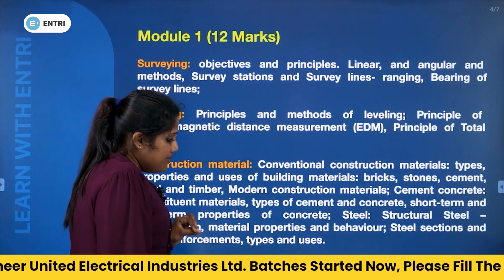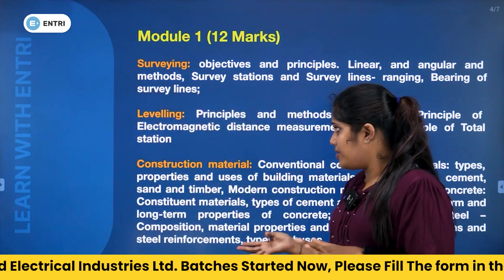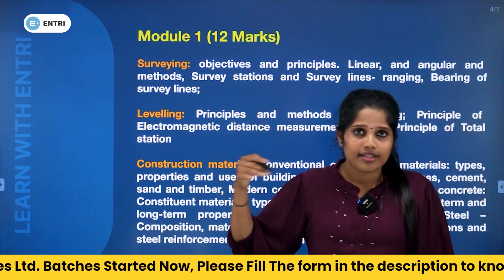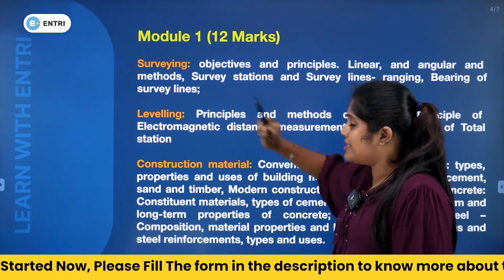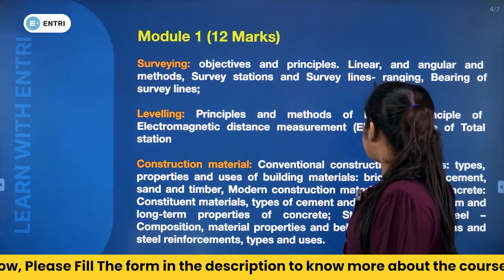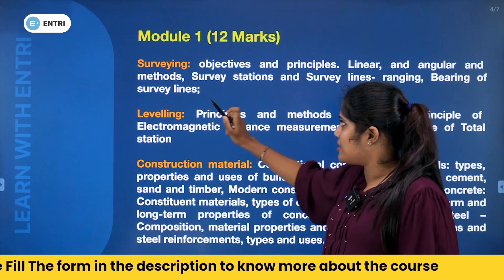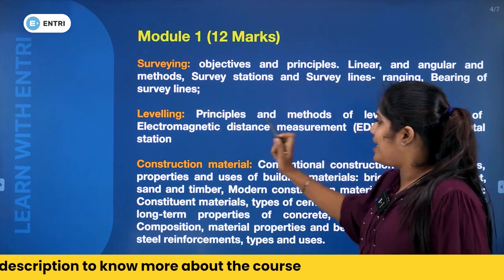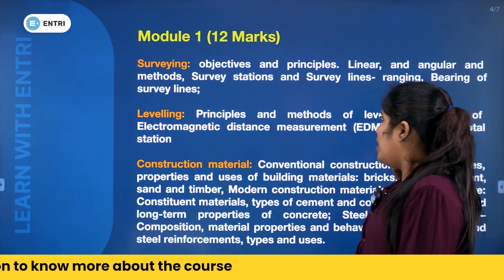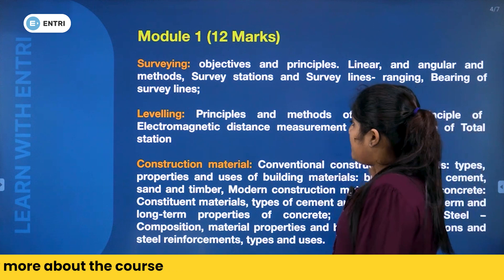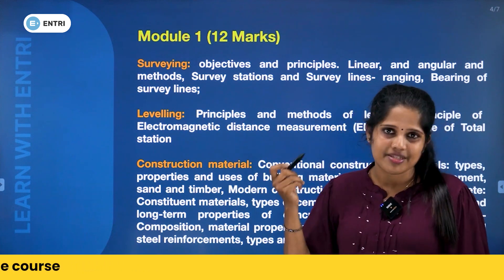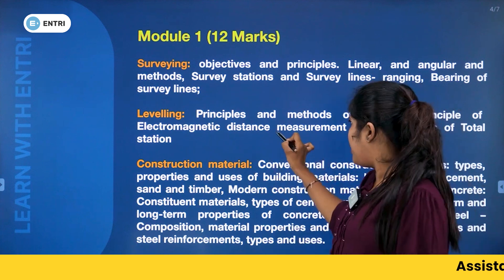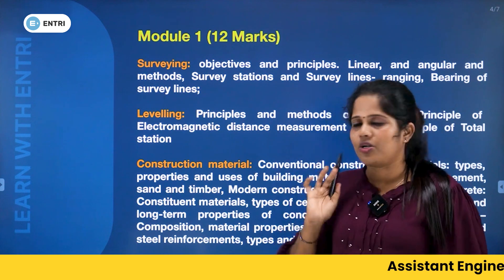We are covering surveying and leveling in two parts. In surveying, we have objectives, principles, linear and angular methods, survey station, survey lines, ranging, bearing of survey line, chain surveying, and compass surveying. Leveling separately covers principles and methods of leveling, principles of Electronic Distance Measuring instrument (EDM), and total station — this part is very important.